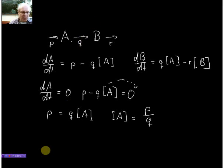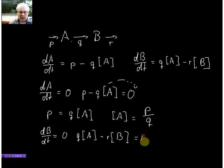Now how does that work for B? It works in exactly the same way. We know that dB over dt equals zero. So q times A minus r times B equals zero. So we can separate A and B and we get q times A equals r times B. And we can very easily solve for B.